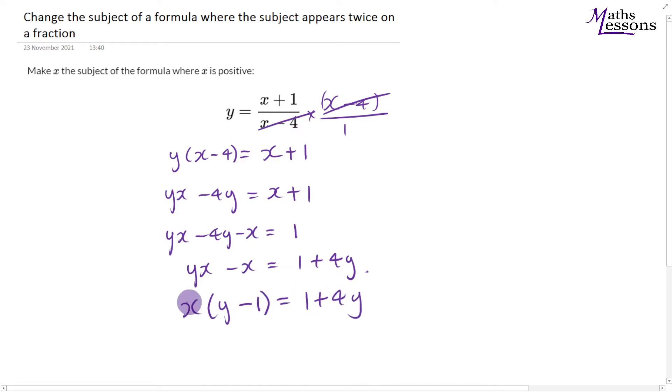Now I've got x times y minus 1. So I can divide both sides by y minus 1 to get x on its own. Dividing this side by y minus 1, I'm just left with x. Dividing this side by y minus 1, I'm left with 1 plus 4y over y minus 1.